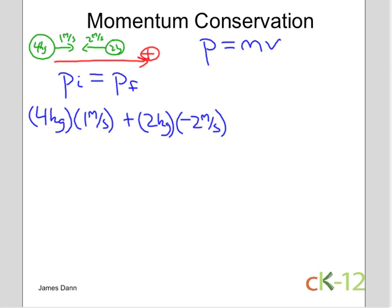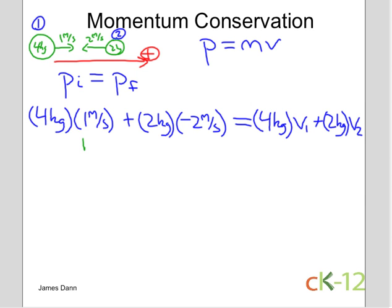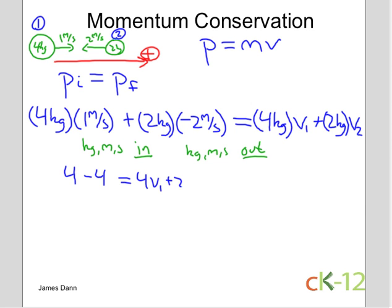This is our positive direction. Setting up the momentum conservation equation — initial momentum equals final momentum — the momentum before the collision is four kilograms times one meter per second, plus two kilograms times negative two meters per second (negative because it's going in the opposite direction). That equals four times V1 plus two times V2 for the final momentum, where V1 and V2 are the final velocities of objects one and two.